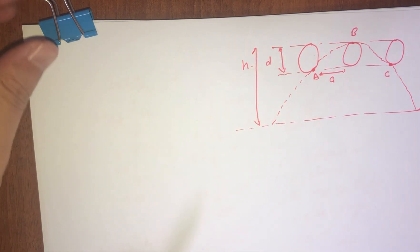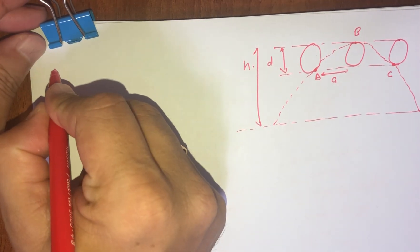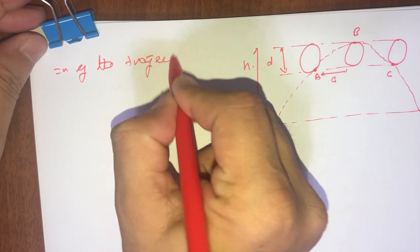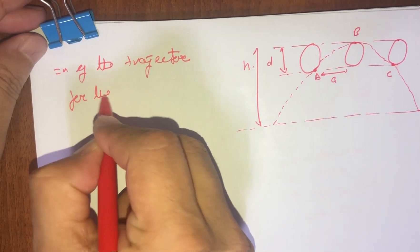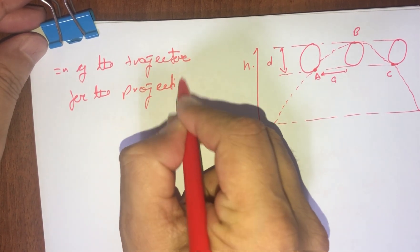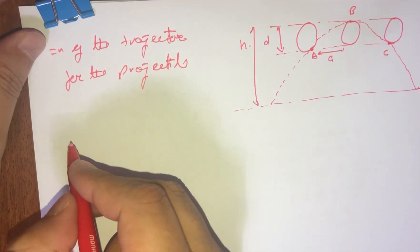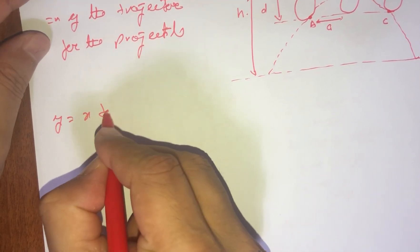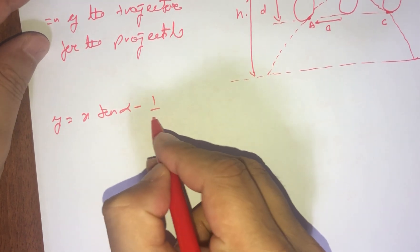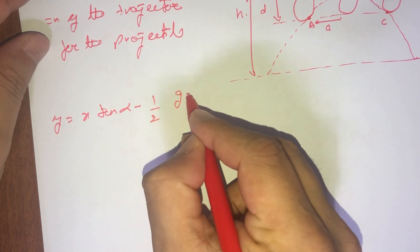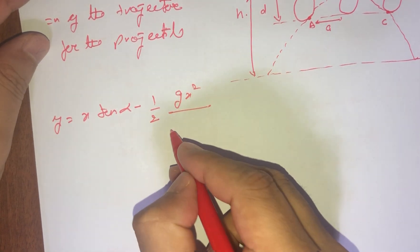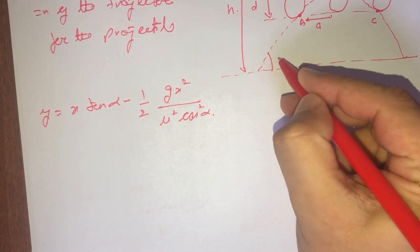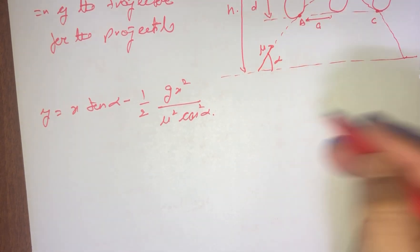We are going to use the equation of trajectory for the projectile. The equation of the trajectory is given as y equals x·tan(α) minus (1/2)·g·x²/(u²·cos²α), where α is the angle of projection and u is the initial velocity with which the particle is projected.